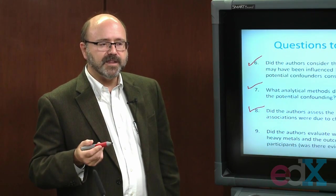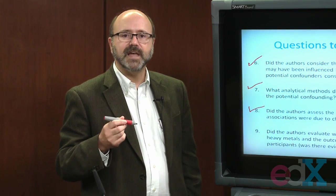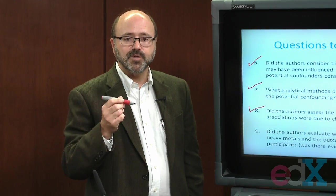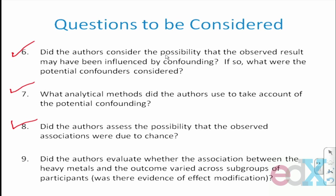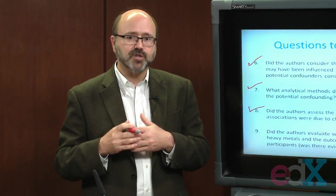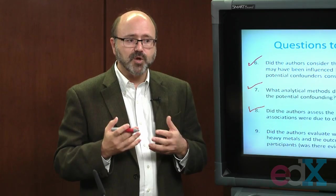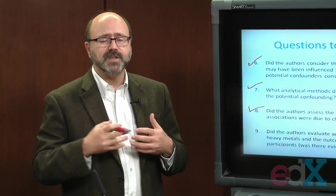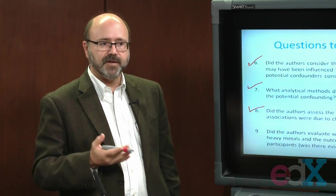The next thing to think about is whether the authors considered the possibility that different levels of heavy metals are associated with a different impact on balance across different subgroups of the population. Did the authors evaluate whether the association differed across different categories of subjects — for example, older versus younger subjects? Sometimes we call this effect modification. Was the observed effect the same or did it differ across subgroups, and how did they express the results of that evaluation?